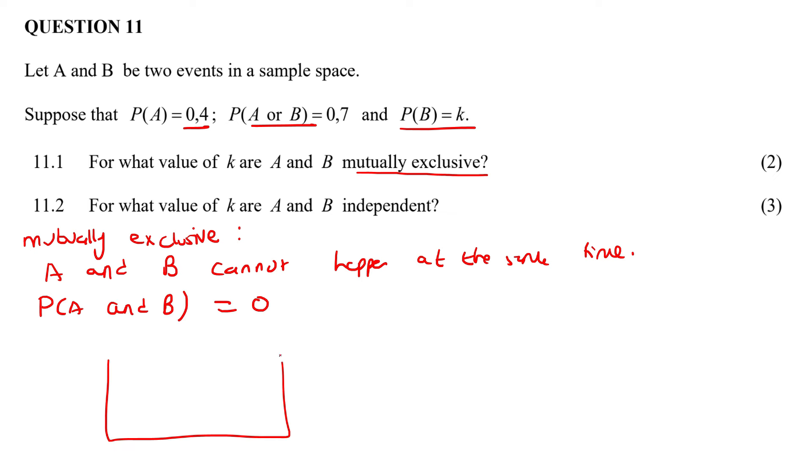Visually, on a Venn diagram, mutually exclusive looks like this. Can you see that the part where they intersect does not exist? Because normally, the part where they intersect, we call that the A and B. That's A and B. But we've just said that with mutually exclusive, this part must be zero.